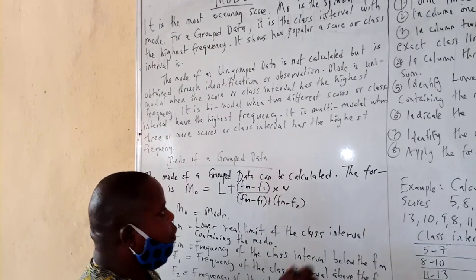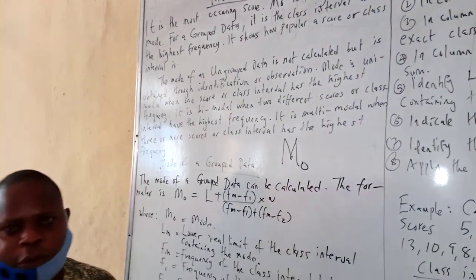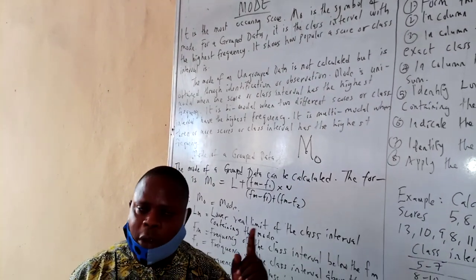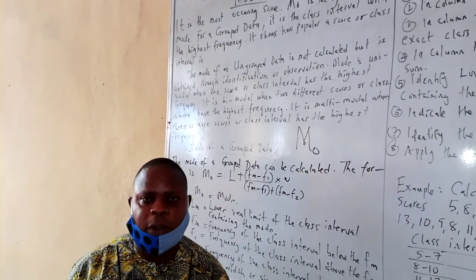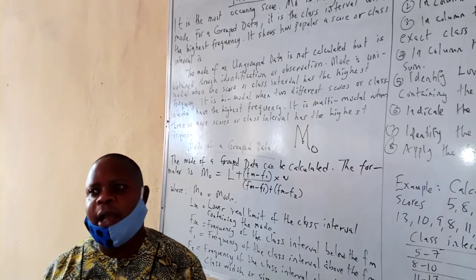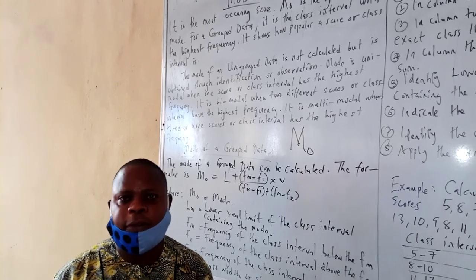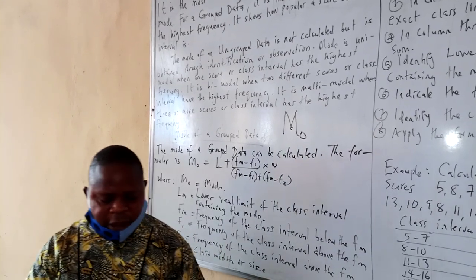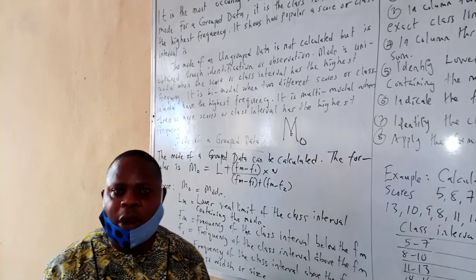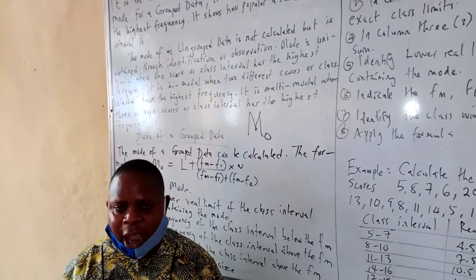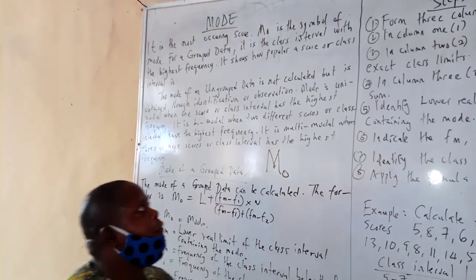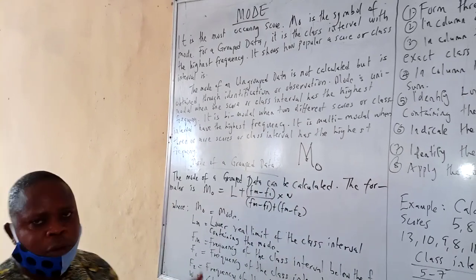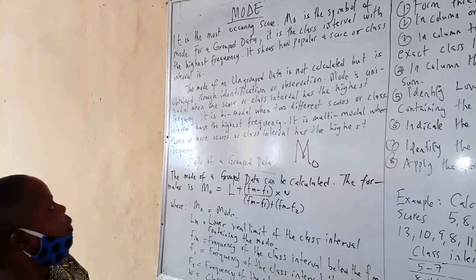Mode has a symbol: capital M, and small o at the foot of that M. Mode is often defined as the most occurring score. It can also be defined, especially for grouped data, as the class interval with the highest frequency. Mode is referred to as a measure of popularity, because it shows how popular a score or a class interval is, according to Professor Absol in his book.